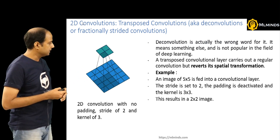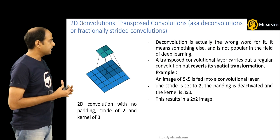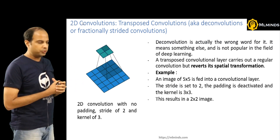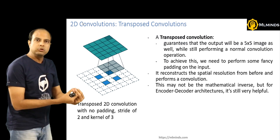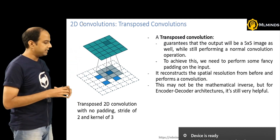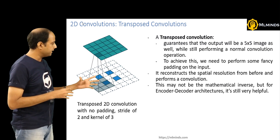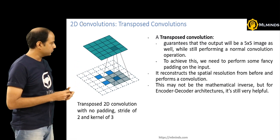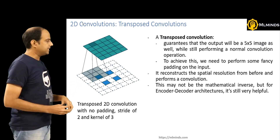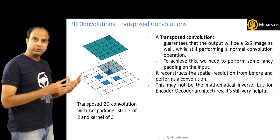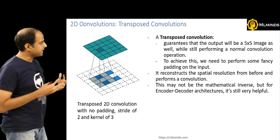A transposed convolution layer carries out a regular convolution but reverses its spatial transformation. Here you see a regular convolution: a 5×5 input with a 3×3 filter, stride 2, and no padding creates a 2×2 output. For the transpose of this, you take the 2×2 input and generate a 5×5 output — essentially the opposite. You align the 2×2 input in such a way that running a 3×3 filter on it with stride 1 gives you a 5×5 output.